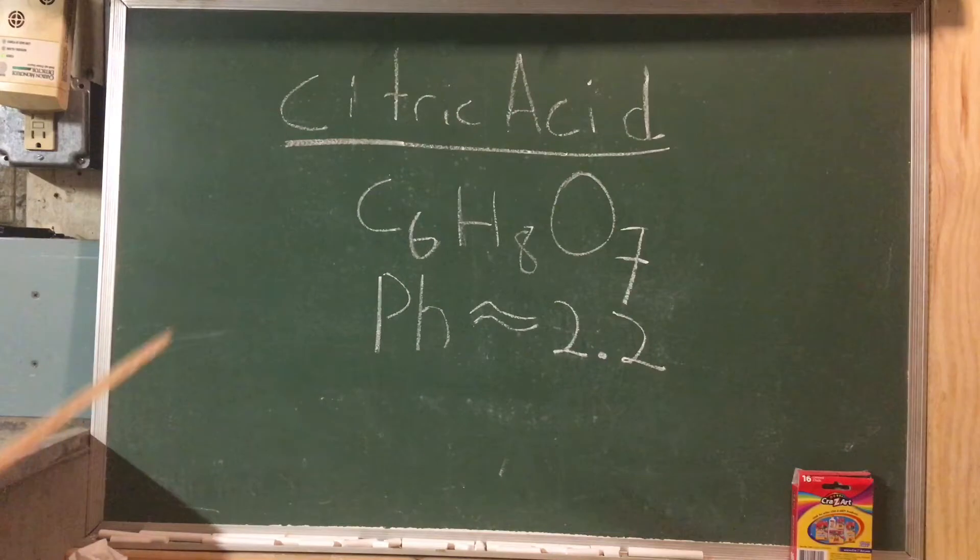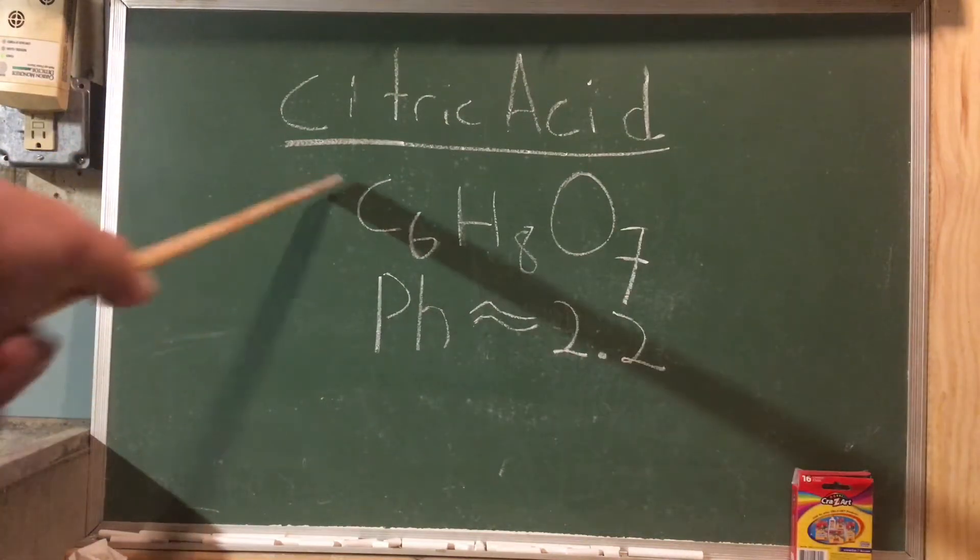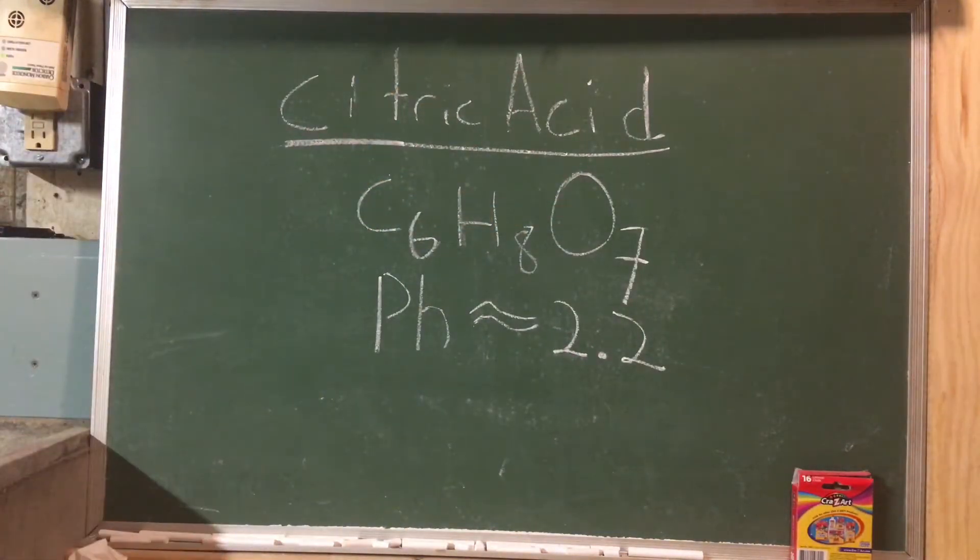An example of something that is acidic is citric acid. This is the same thing in lemons that makes it sour. It has a chemical formula of C6H8O7 and a pH of about 2.2.